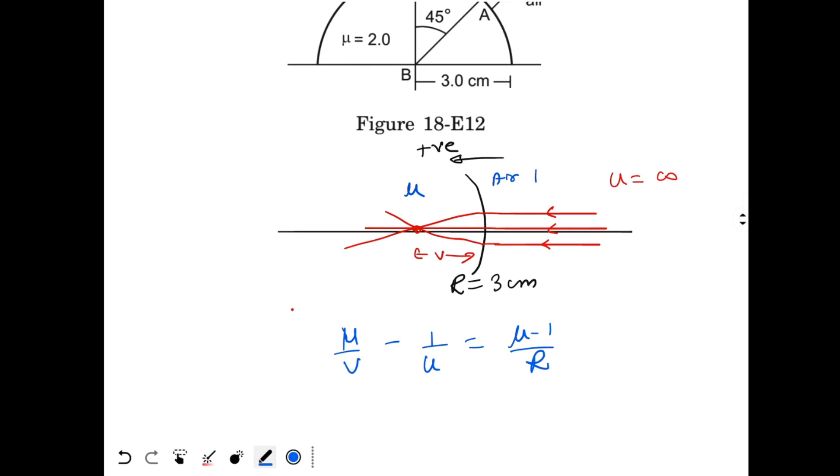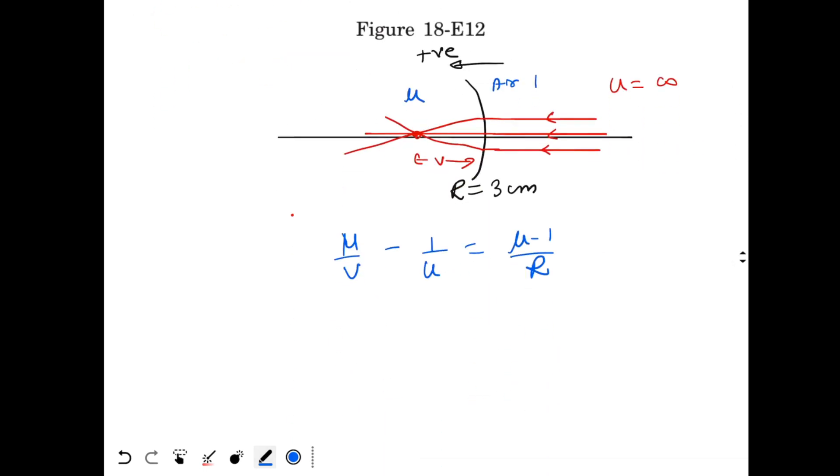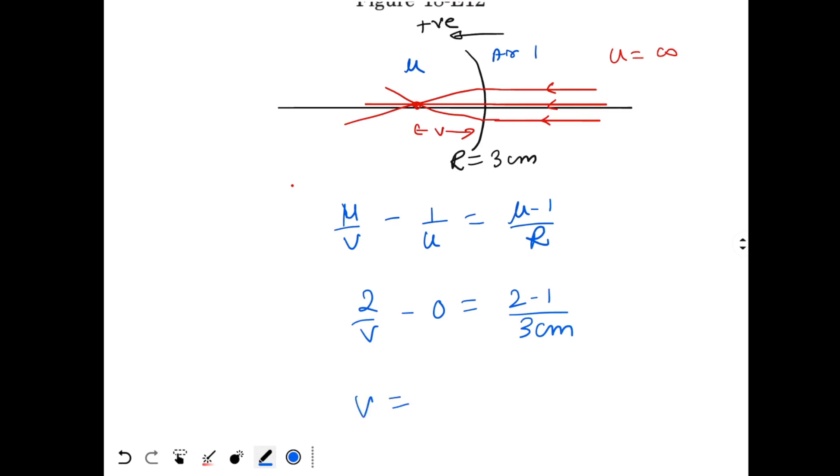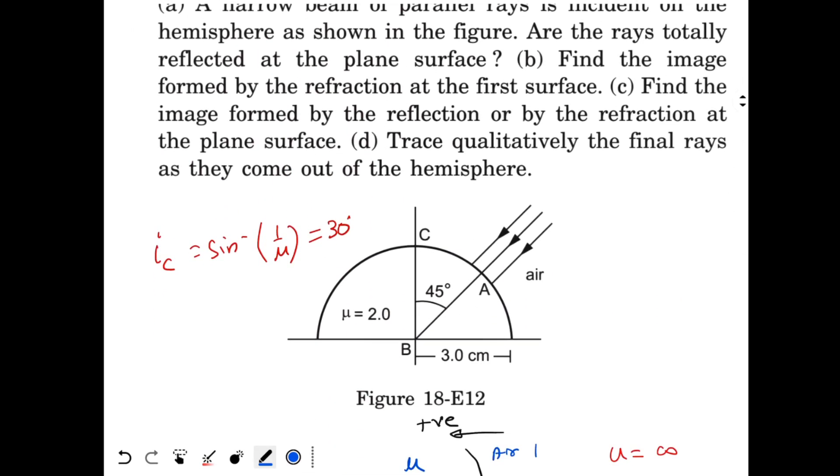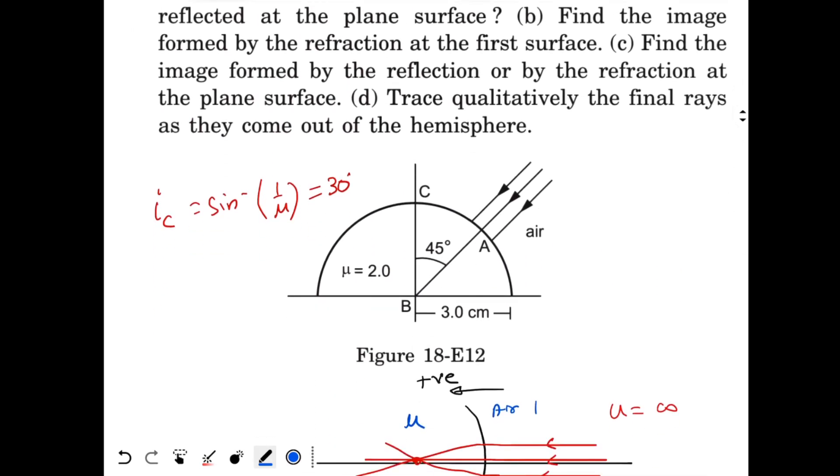So here U is infinity and μ is 2. So 2/V - 0 = (2-1)/(3 cm). So V will come out to be 6 cm. And this means what? In the original diagram, when you extend this ray, this distance is 3 cm, so you need to extend further in the same direction.